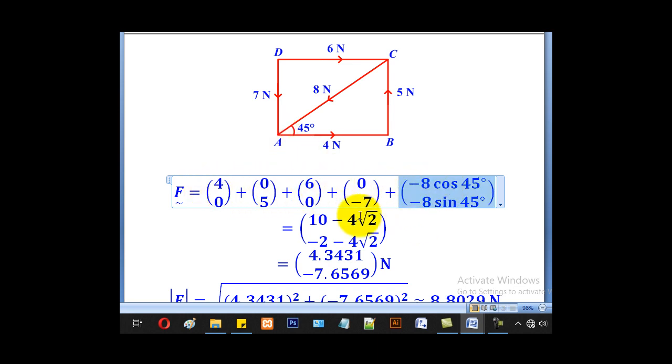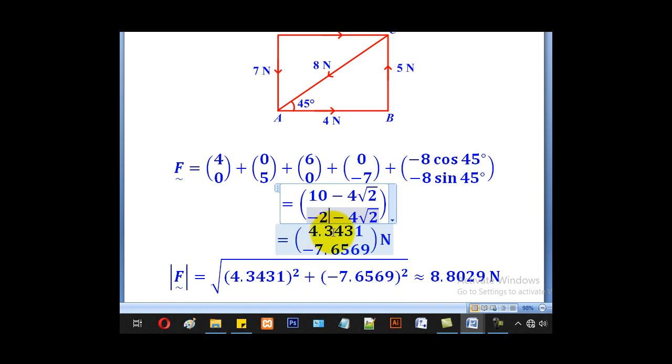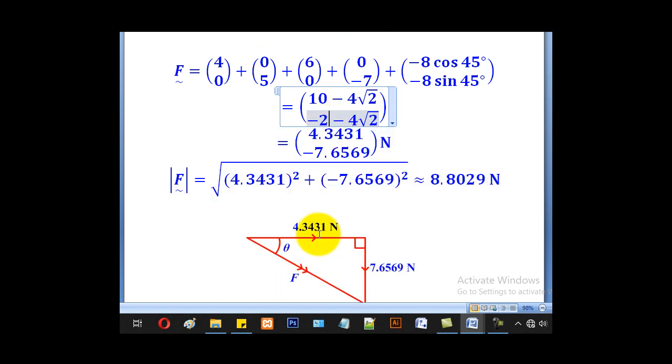Using the calculator, the horizontal component will give us 10 - 4√2, and the vertical component negative 2 - 4√2. When we use the calculator, we get 4.3431 for the horizontal and -7.6569 for the vertical. The horizontal is positive, vertical is negative, giving us a right angle triangle.